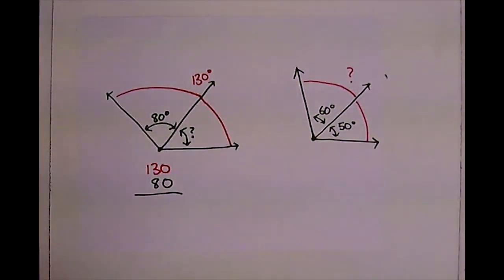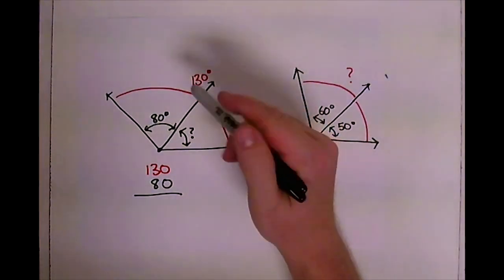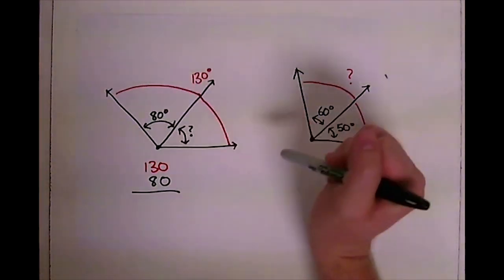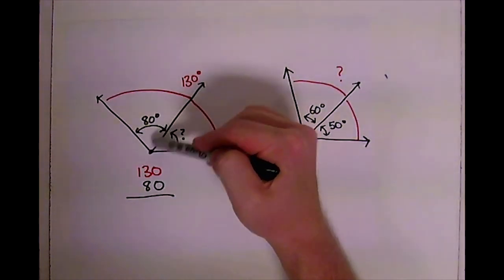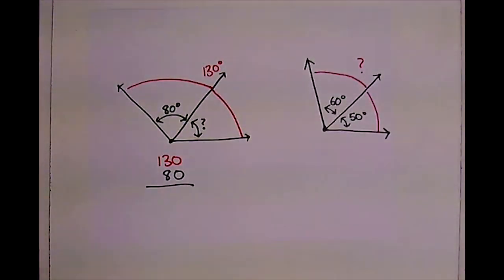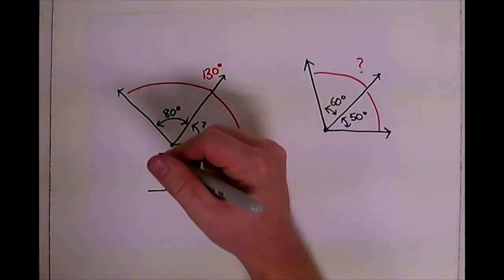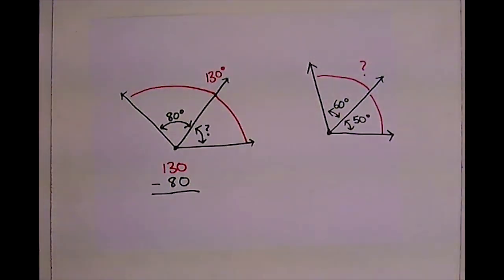And if we just look at this and we're trying to figure out this in here, we're going to know that the number should be smaller than 80 and it's definitely smaller than 130 because this angle is not as big as that angle. So that right there should tell you that it needs to be a smaller number and whenever we're working with trying to make things smaller, it's usually subtraction.